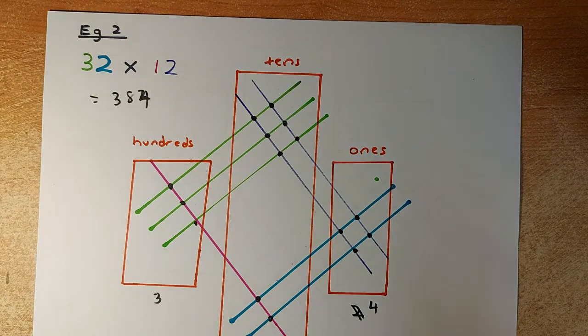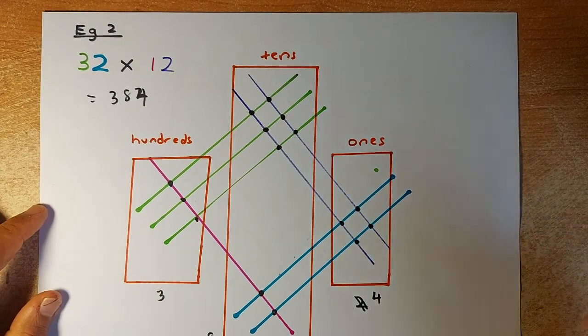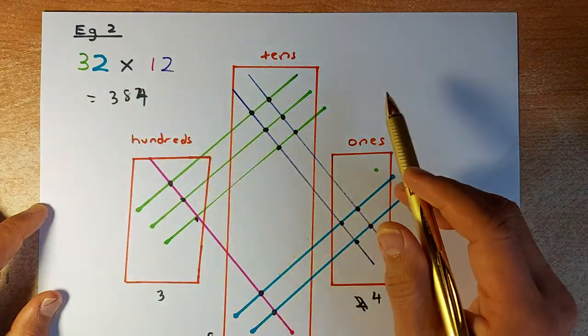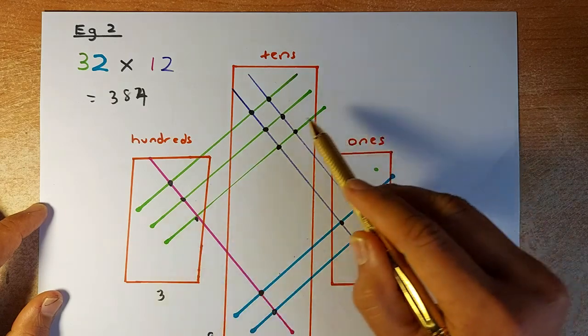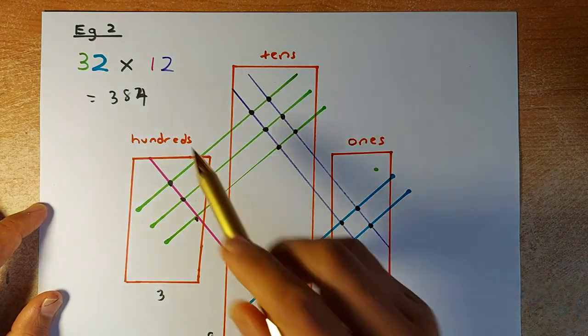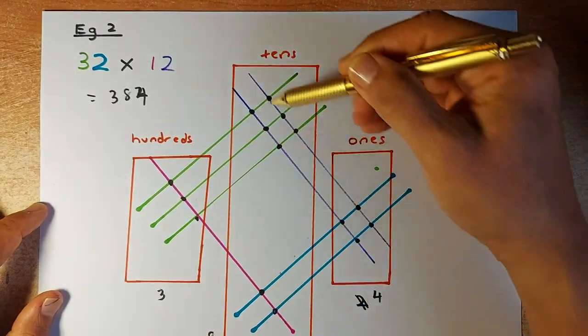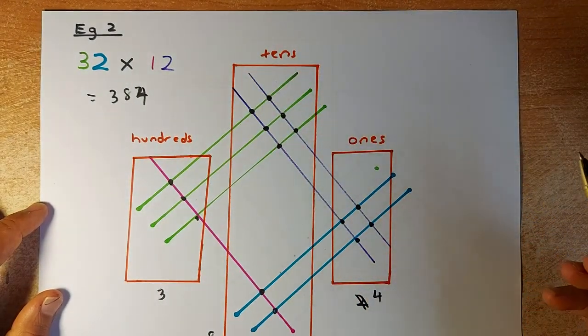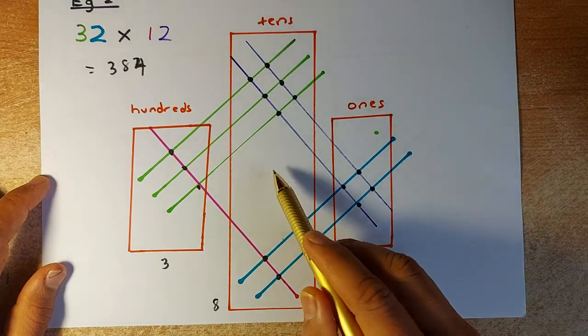The second example is similar but with different numbers. Suppose we have 32 times 12. First you draw 3 green lines, 2 blue lines, 1 pink line, and 2 purple lines. Next step, put them into regions: the ones, the tens, and hundreds.